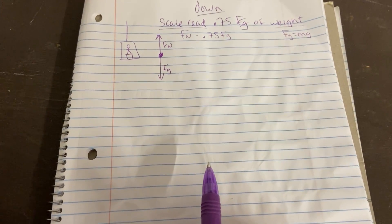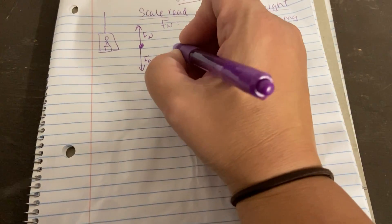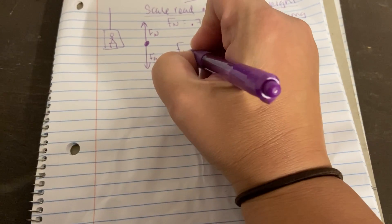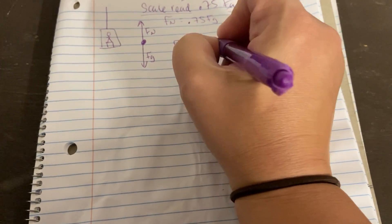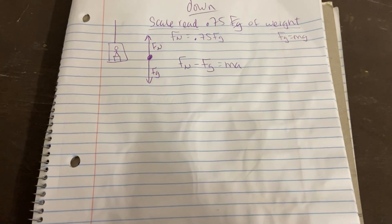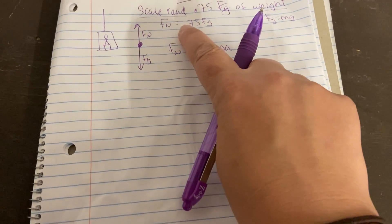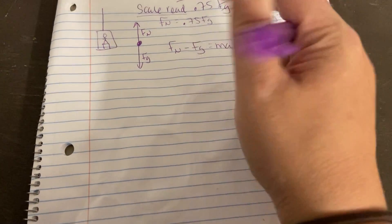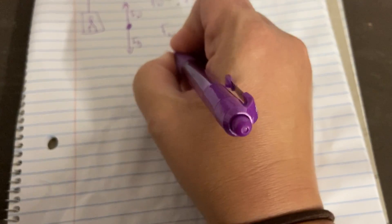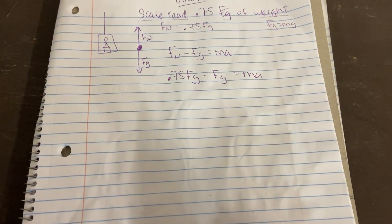Now, once we have a free body diagram, we ask ourselves, is the person accelerating? Well, yes, they are accelerating. So we're going to take Fn and we're going to subtract Fg and set that equal to Ma. And now it's just a series of steps to substitute in the values that we know. So I know that the normal force is 0.75 Fg. So I'm going to sub that in. And then where you see Fg, you can put mg.